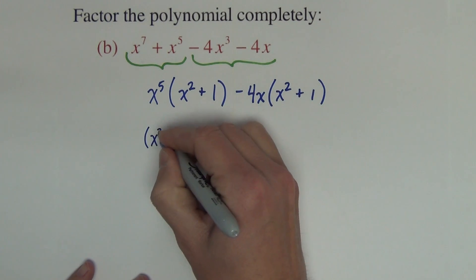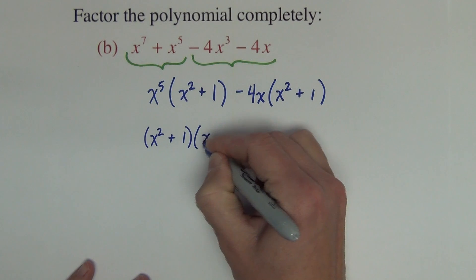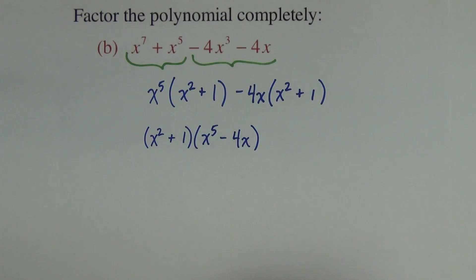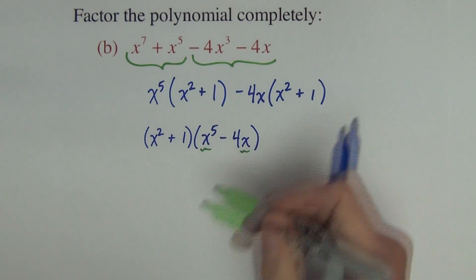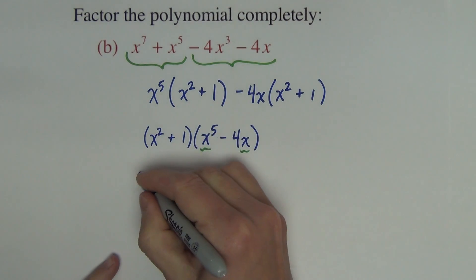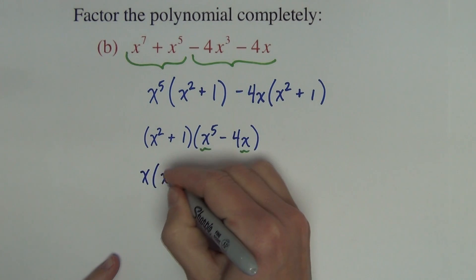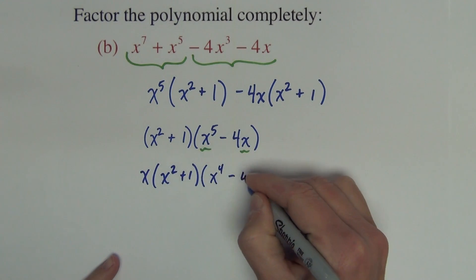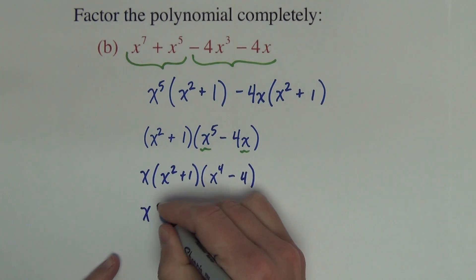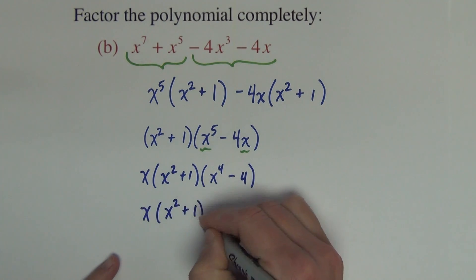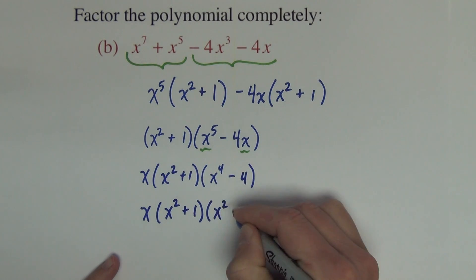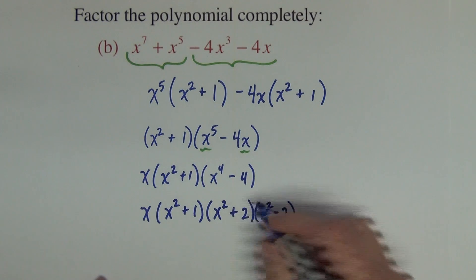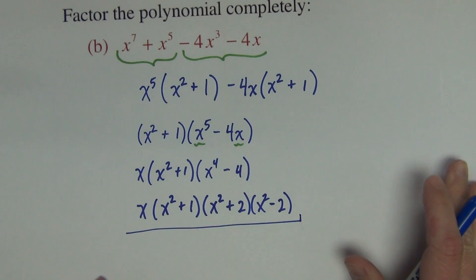The x squared plus 1 is common, leaving me with x to the fifth minus 4x. Now we notice in this binomial there is a common factor of x, so I take it out, leaving behind x to the fourth minus 4. And we recognize x to the fourth minus 4 as a difference of squares, which factors as x squared plus 2 times x squared minus 2.